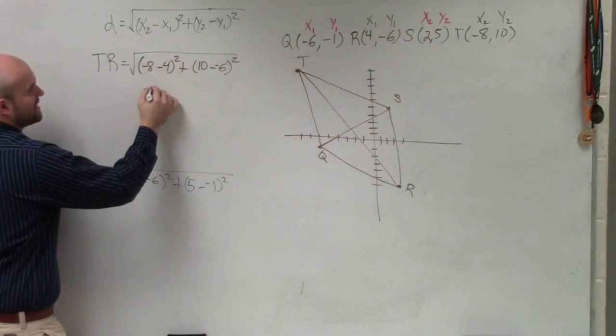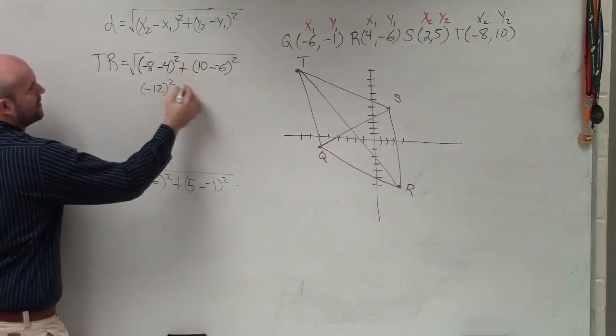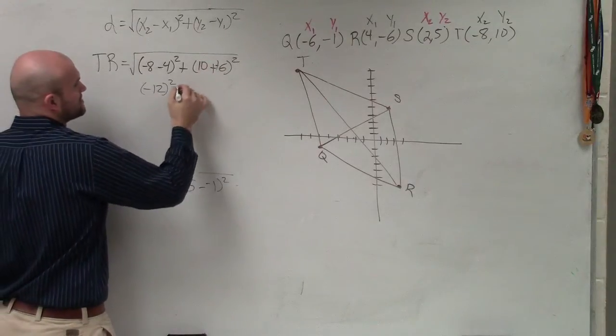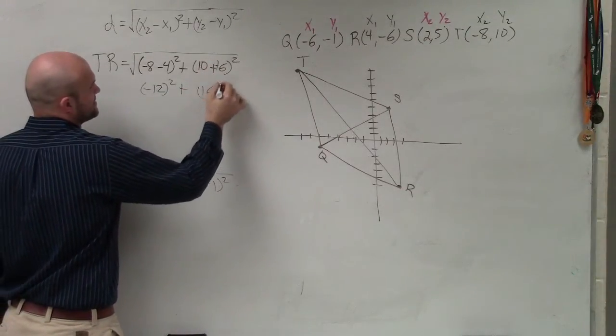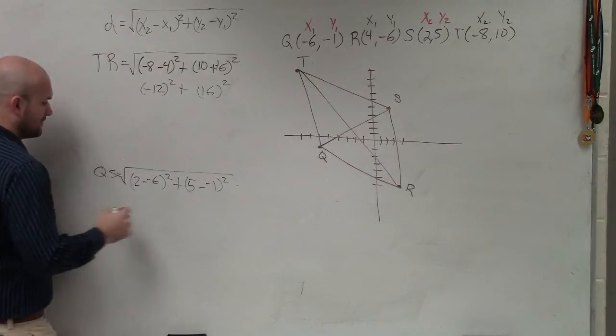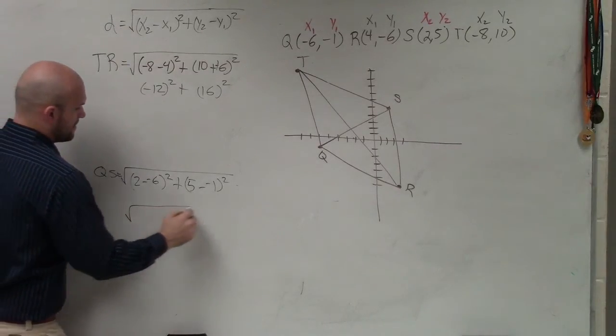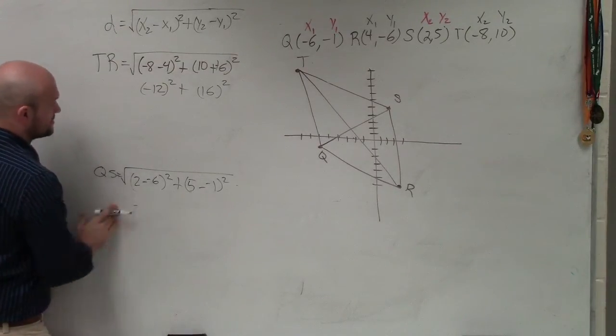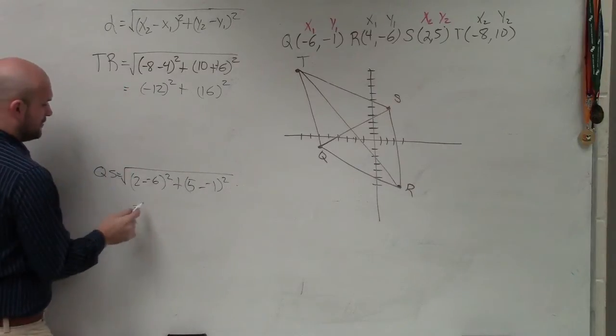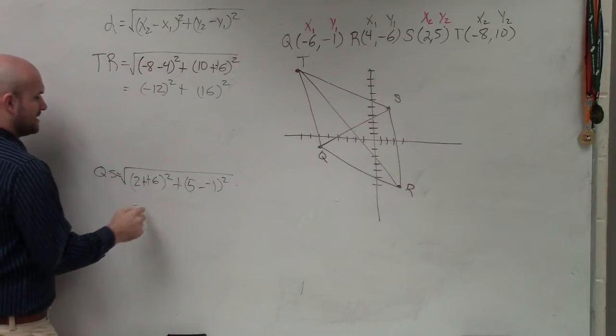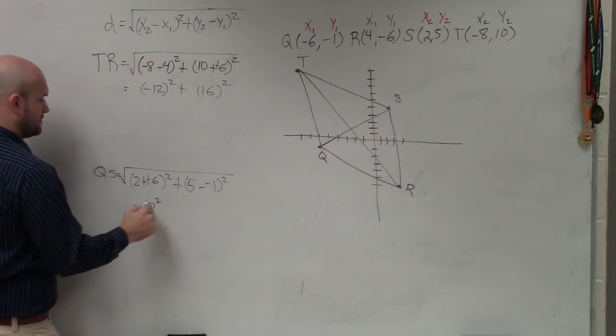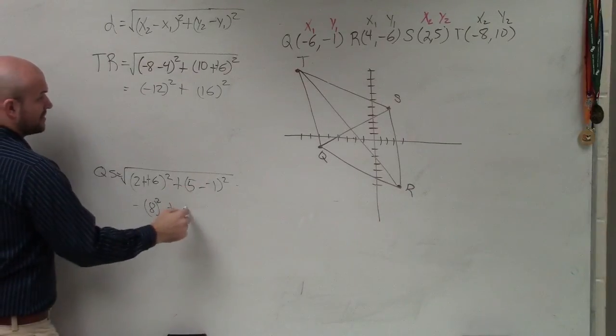So therefore, this becomes (-12)² plus (16)². Over here, that's still under square root, so I'll just leave it. Over here, we have 2 minus double negative, so that's 8² + (5 - 6)², which is 8² + 6².